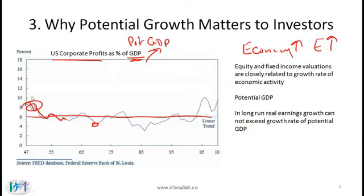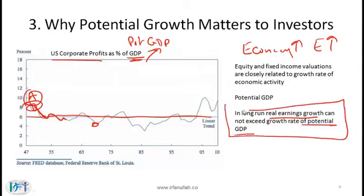At point A, where corporate profits are temporarily higher than 6% of GDP: GDP measures total income in the economy. If earnings are relatively high but people are not getting paid for their extra work, eventually they will slack off and the ratio will come down. The key point is that in the long run, real earnings growth cannot exceed the growth rate of potential GDP.